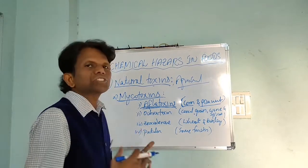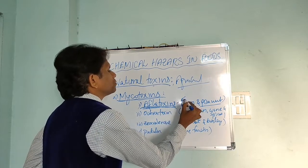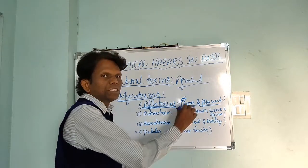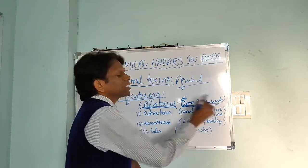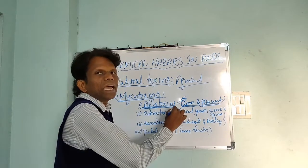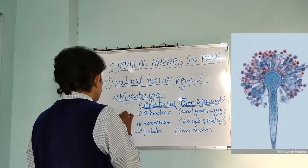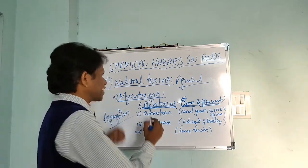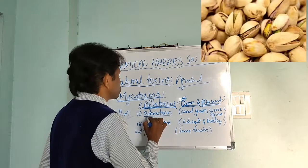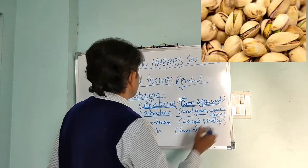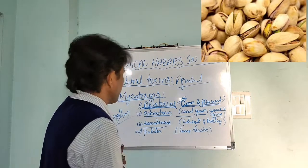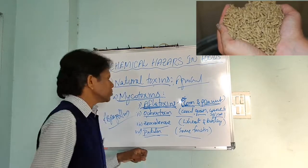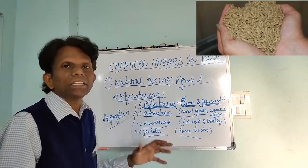When corn or peanuts are grown under stress or drought conditions, mold growth occurs in these crops. Wet harvesting and climatic emergencies, or failure to dry the corn or peanuts properly after harvesting, lead to Aflatoxin production by molds such as Aspergillus. Other mycotoxins include Ochratoxin, produced by some fungi acting on cereals, grains, wine, and spices; Zearalenone, affecting wheat and barley; and Patulin, found in some fruits. These are the major and most potent mycotoxins present in agricultural commodities.